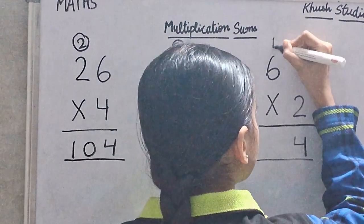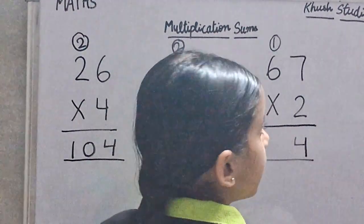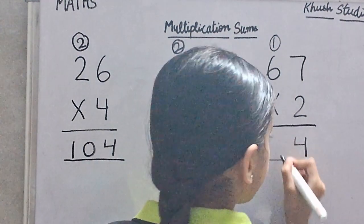We will carry 1. 6 twos are 12. So we will add 1 to 12.